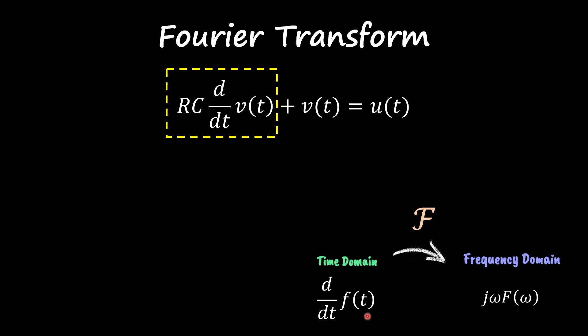So I get jω times my V in the frequency domain, times the constant RC. The second one is straightforward—F(ω), or in this case V(ω).